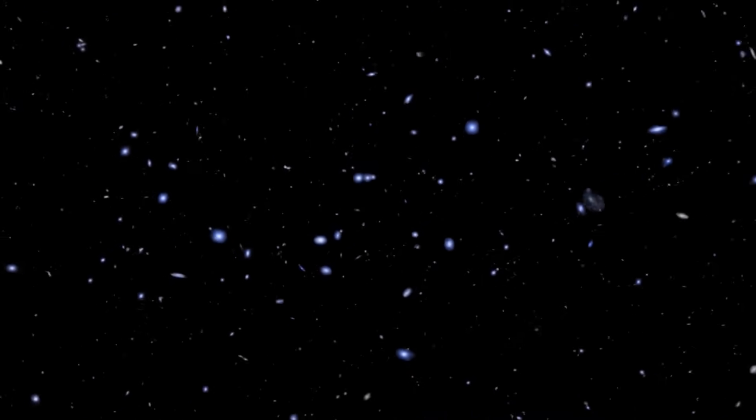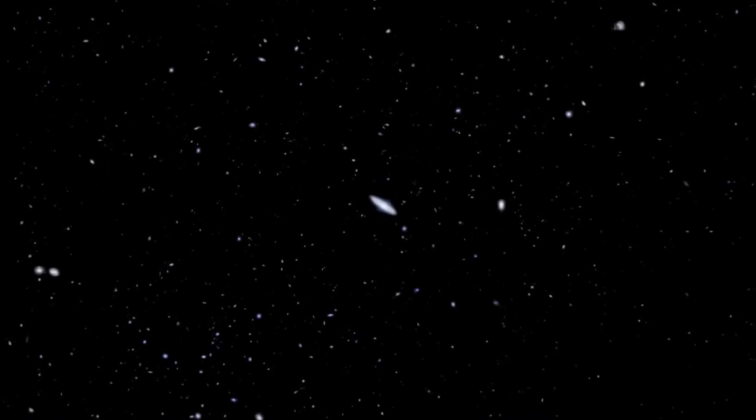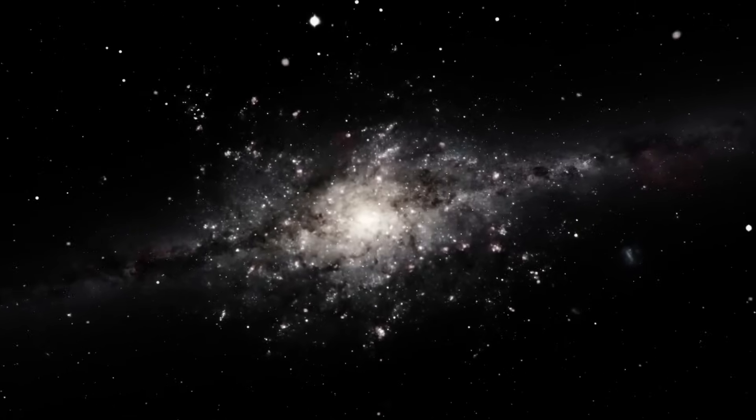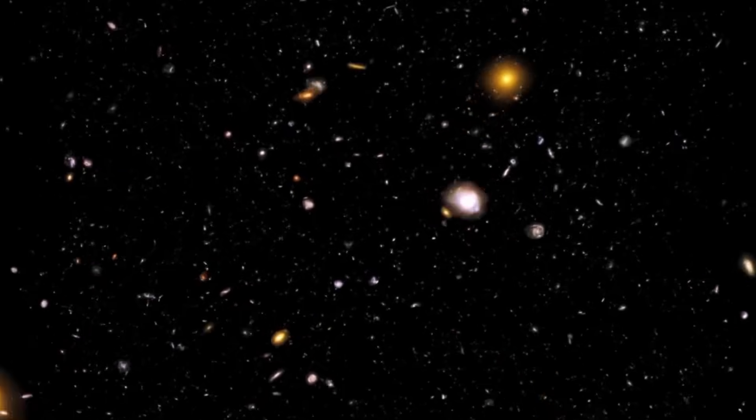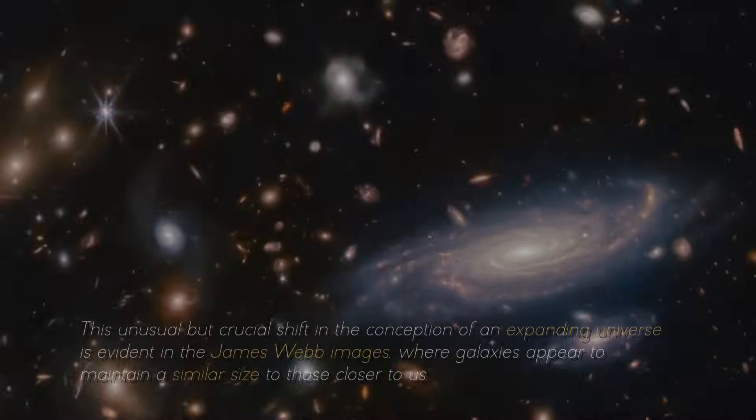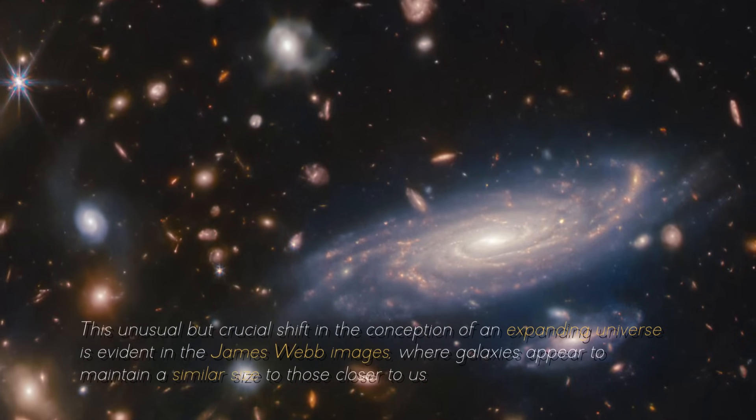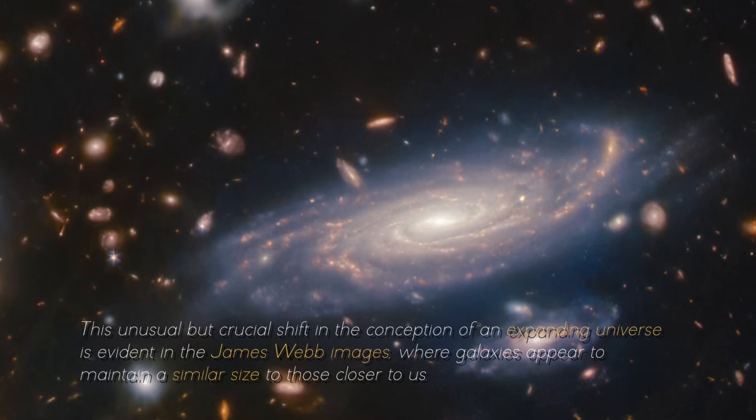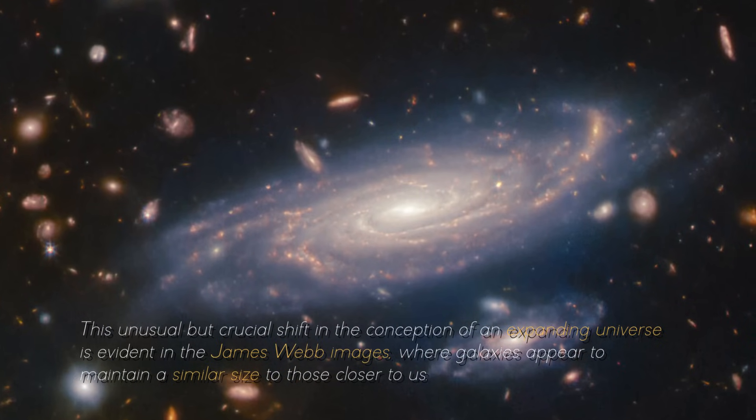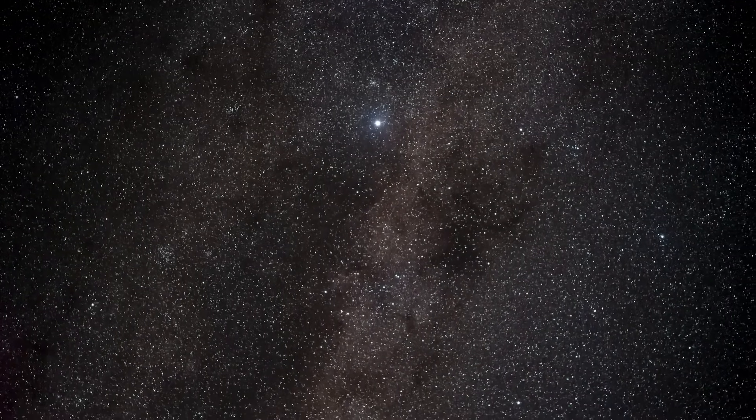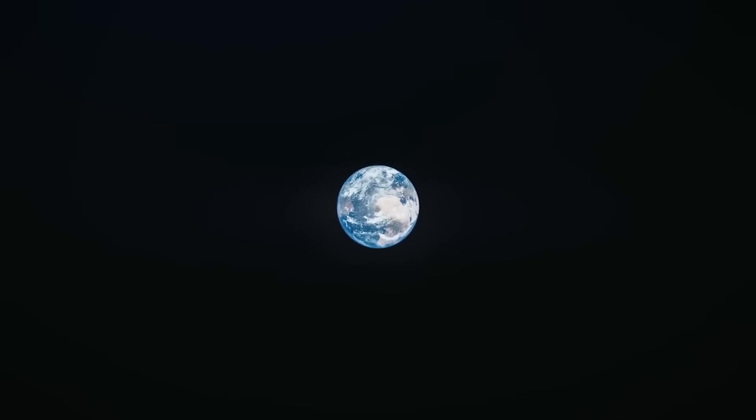To simplify these discrepancies, imagine the universe as an expanding globe. According to conventional theory, galaxies should not appear smaller as they move away from us. At a certain point, they should begin to appear larger, since their light would have had to travel from when they were closer. This unusual but crucial shift in the conceptions of an expanding universe is evident in the James Webb images, where galaxies appear to maintain a similar size to those closer to us. In reality, the conventional theory may be making several mistakes, surprising as it may seem.